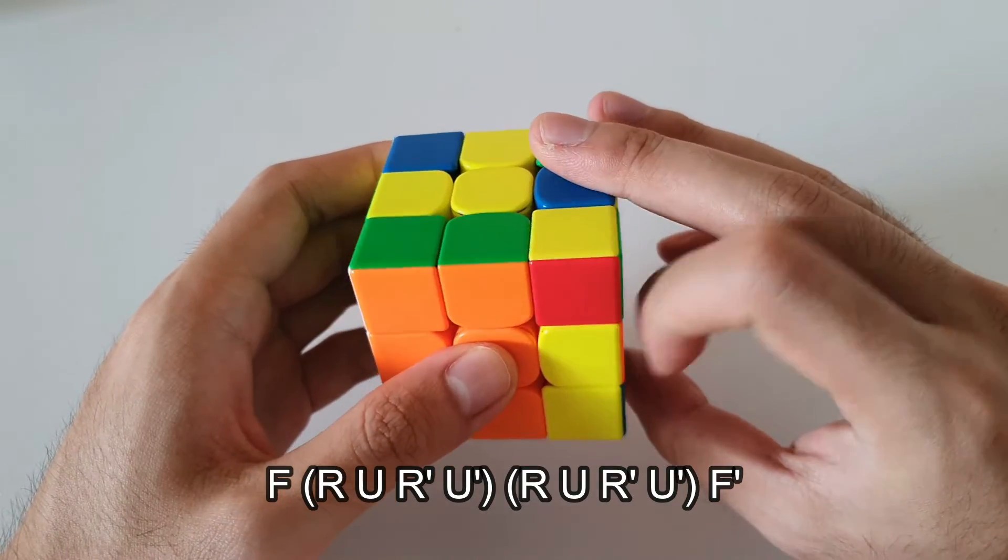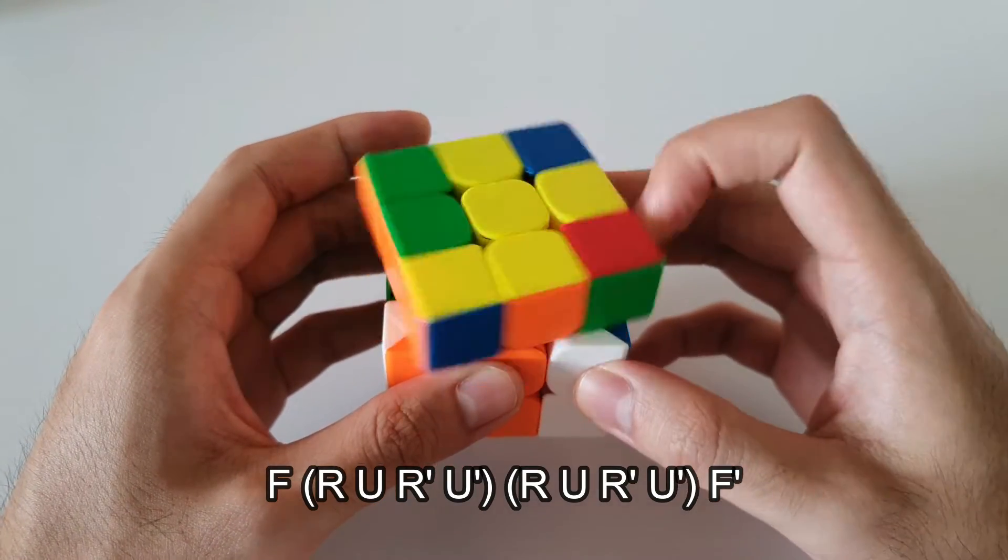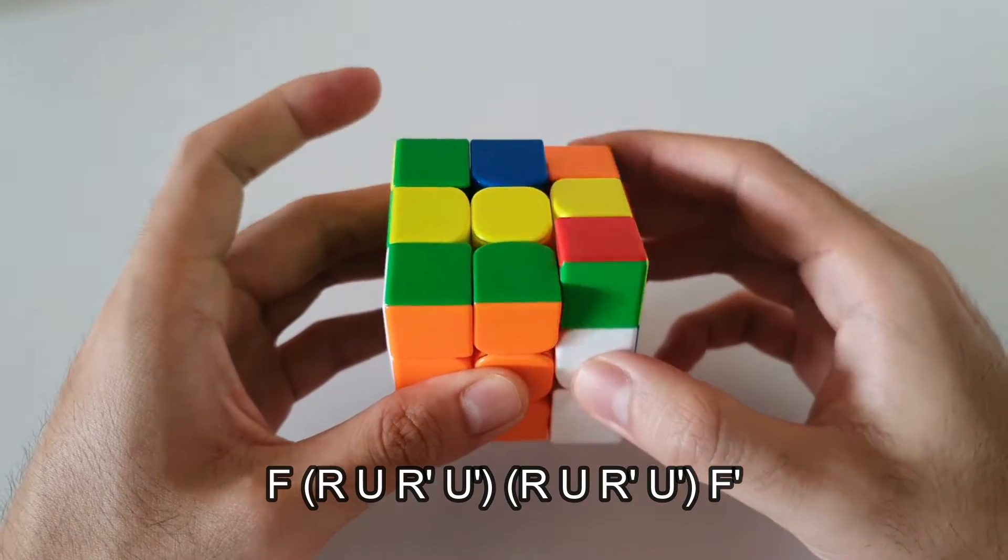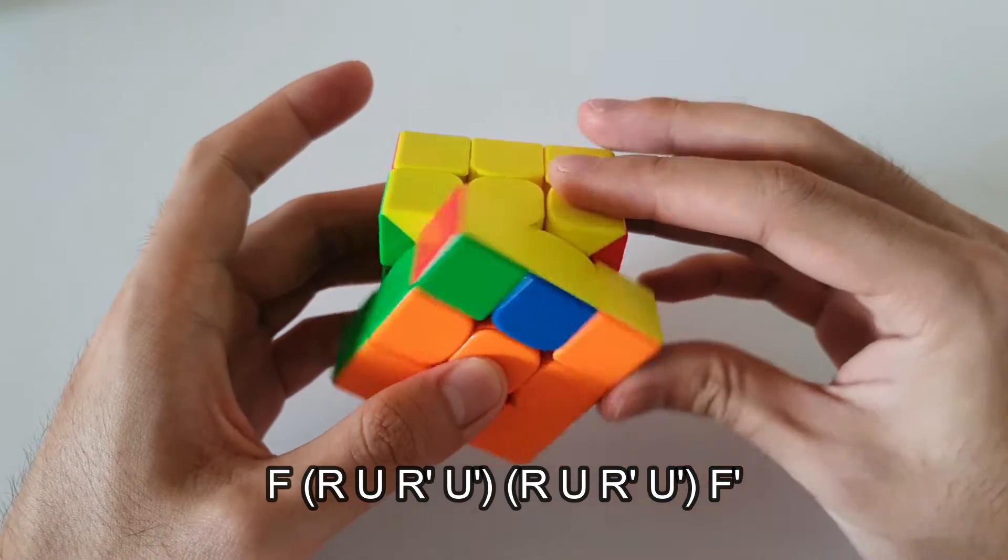It starts off with an F move, followed by double sexy, and then you end off with an F prime.